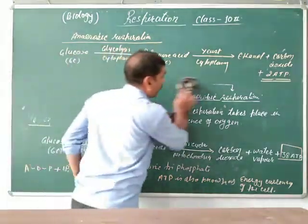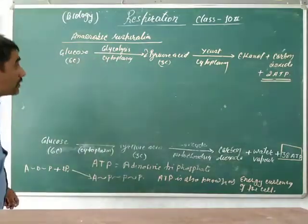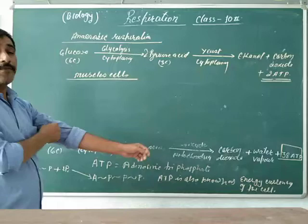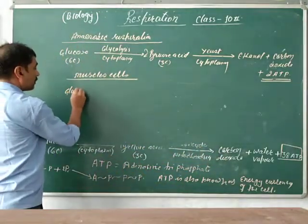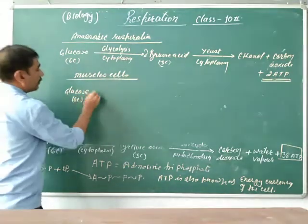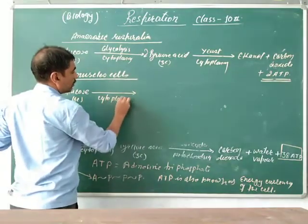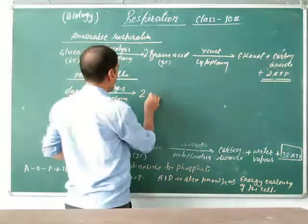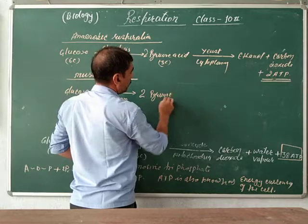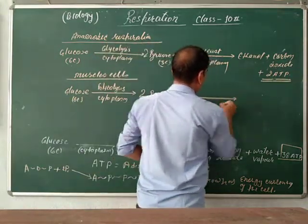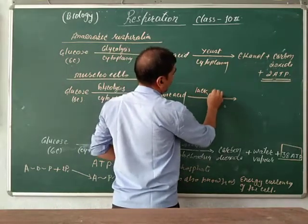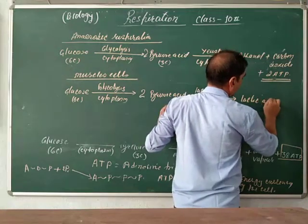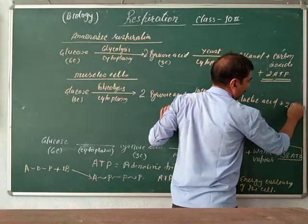Anaerobic respiration also occurs in our muscles. In the muscles, due to lack of oxygen during heavy exercise, glucose molecules enter the cytoplasm and by the glycolysis method are broken into only two molecules of pyruvic acid. Again, in the absence of oxygen, pyruvic acid is converted into lactic acid — 2 molecules of lactic acid plus 2 ATP energy.